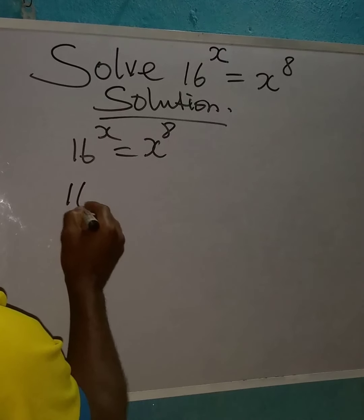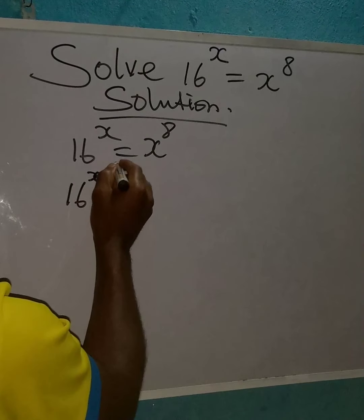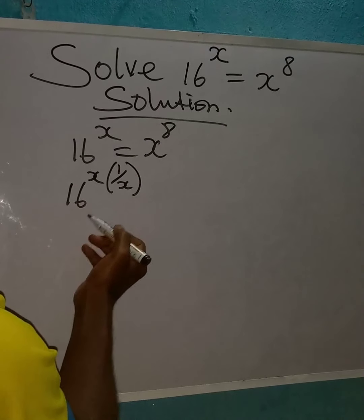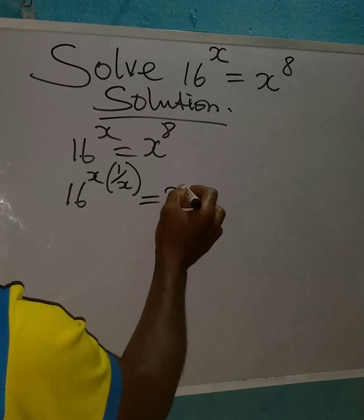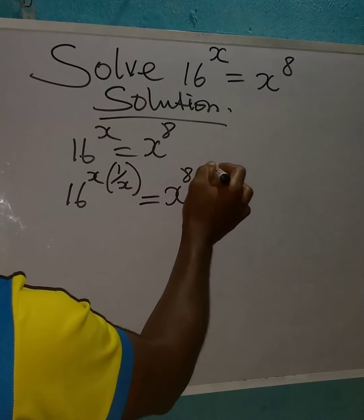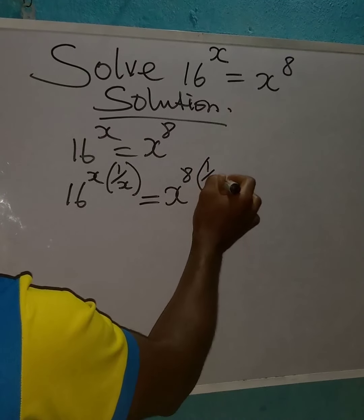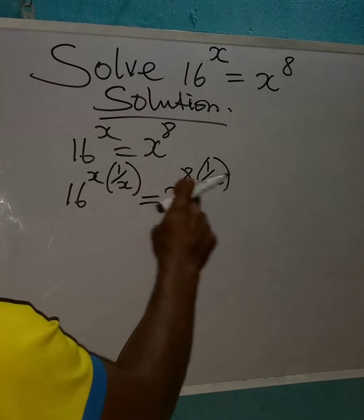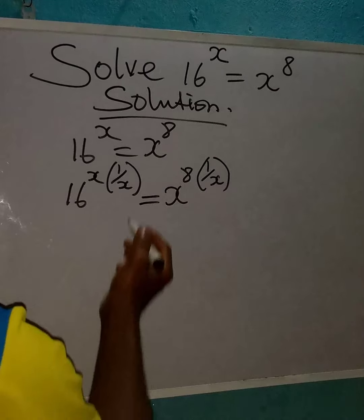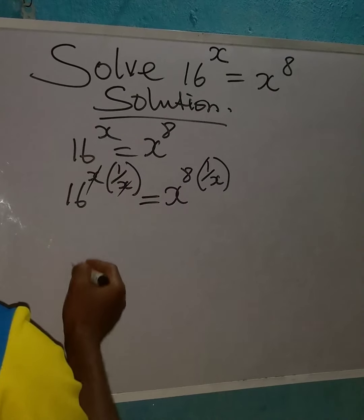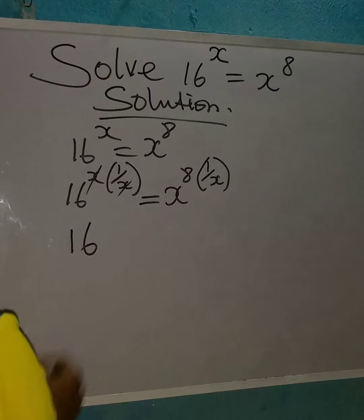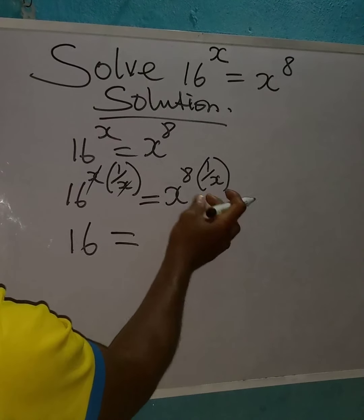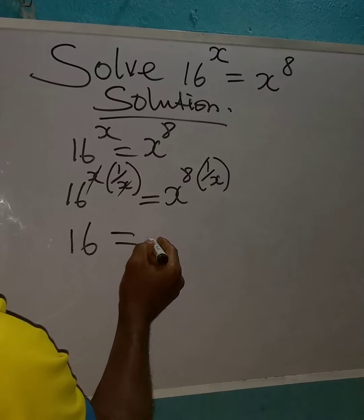So we multiply 16^x by 1 over x, so that we can cancel the x. This will be equal to x to the power 8 multiplied by 1 over x — because whatever you do on the left-hand side you must do on the right-hand side. The x cancels x, and what we have here is 16.